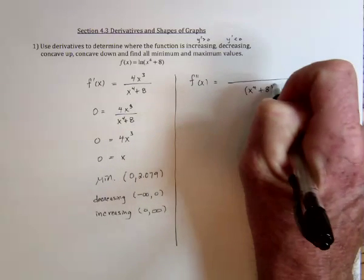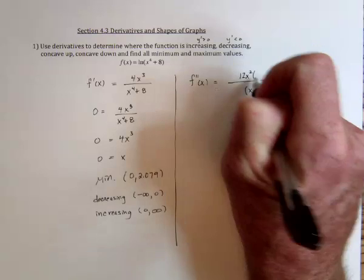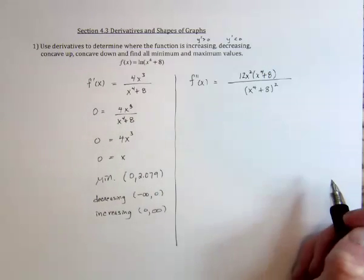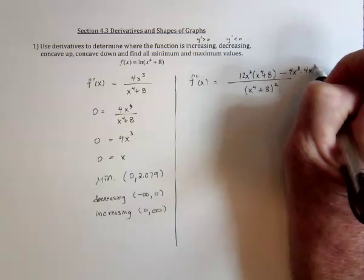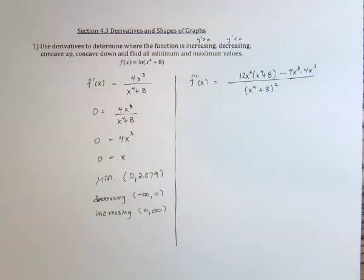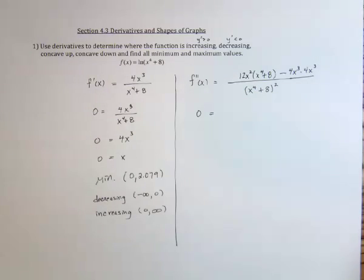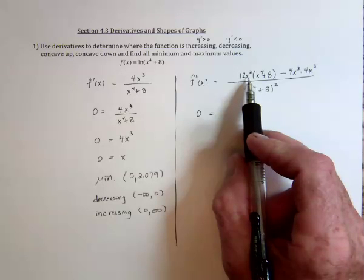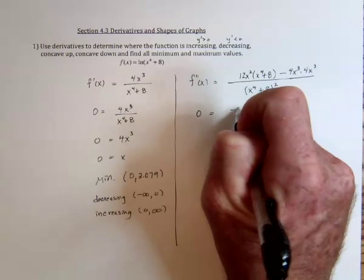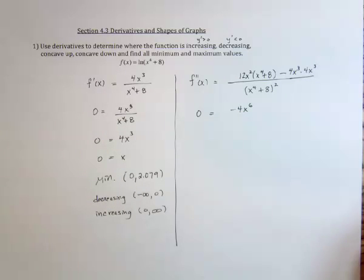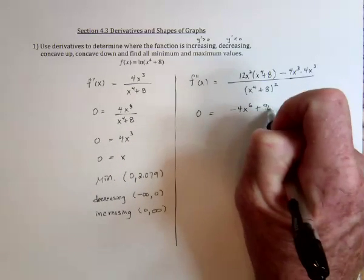So the denominator is squared, then take the derivative of the numerator, leave the denominator alone, minus take the derivative of the denominator and leave the numerator alone. And once again, we need to know where is it undefined — nowhere — and where is it equal to zero — only where the numerator equals zero. This is going to be 12x to the sixth when I distribute, minus 16x to the sixth, so that's negative 4x to the sixth, and then distributing with the 8 gives 96, so plus 96x squared.